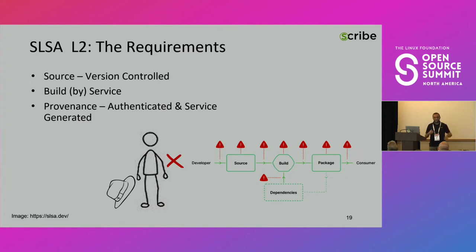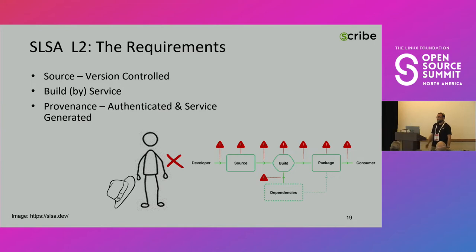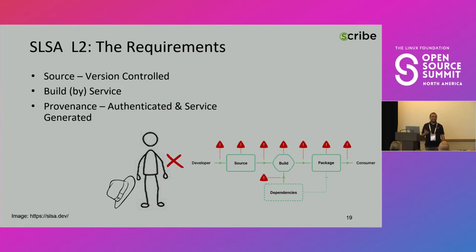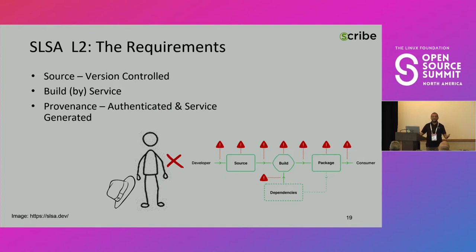Like if you're an attacker and you know everything is recorded in version control, you need to be more careful — it should deter the programmer or an attacker who compromised the programmer's machine. Also, building by a service takes the power from the programmer and puts it in some other service. And when the provenance is service-generated, it's not the programmer writing down some provenance document — it's generated somewhere else, which is supposed to be better than giving this authority to the programmer himself.